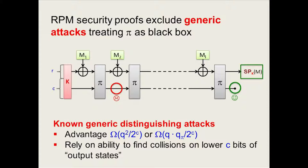The best attacks we know to distinguish keyed sponges from a random function achieve advantages of the form q squared over 2 to the C, where q is the number of construction queries, or if you allow primitive queries, something like q times q_pi over 2 to the C. The bottom line is that all of these attacks rely on finding collisions on the lower C bits of the state — specifically, collisions on the lower C bits for states that lead to an output. It's pretty much all we know how to do.